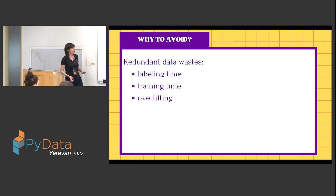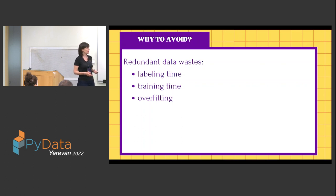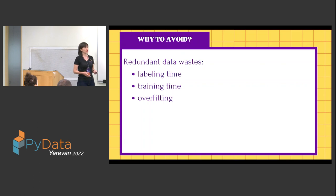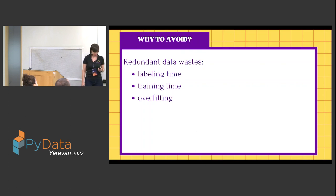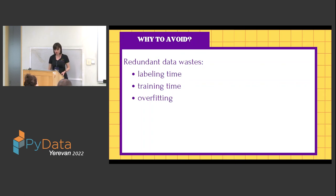One more reason we don't want redundant data: we have to label it, which wastes time. If we have a lot of redundant data, we need to train on it, which wastes GPU, budget, and time. And finally, a bad dataset can cause overfitting. So we need to find the reasons and reduce redundancy from the dataset.